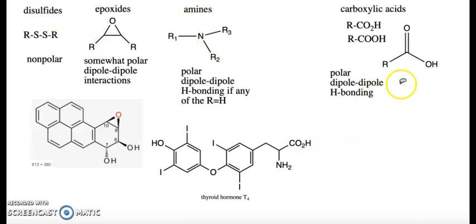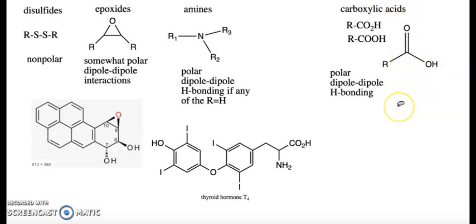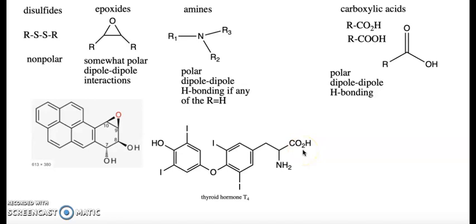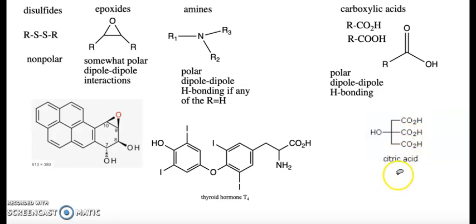Carboxylic acids are written as RCO2H or RCOOH — a carbon double-bonded to an oxygen and single-bonded to an OH. These are acidic, polar molecules with dipole-dipole interactions and very strong hydrogen bonding. We'll discuss their acidity in a later chapter. There are many naturally occurring carboxylic acids; one example is citric acid, a tricarboxylic acid with three carboxylic acid groups.